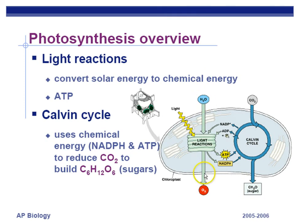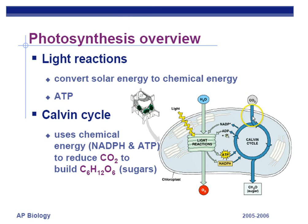Oxygen comes from water in the light reactions. We break apart water in a process called photolysis to make oxygen as a waste product — we're actually breaking apart water for electrons. In the Calvin cycle, which happens in the stroma, carbon dioxide from the air is combined to make PGAL. Two PGALs combine to make a glucose molecule. The light reactions capture light energy and make high-energy molecules used by the Calvin cycle.